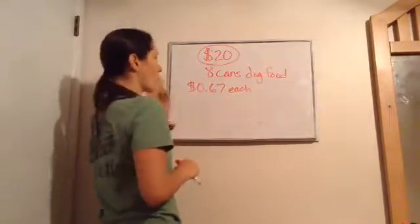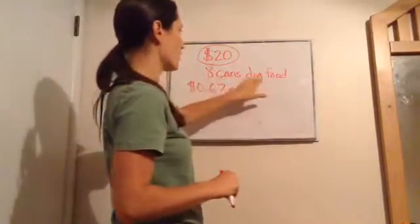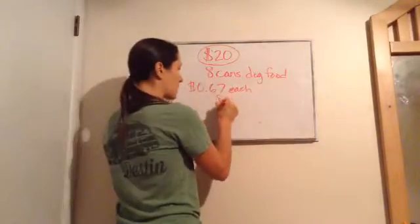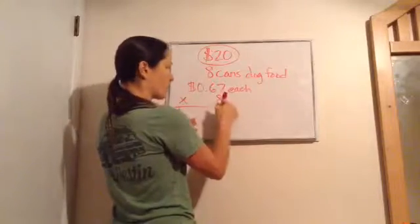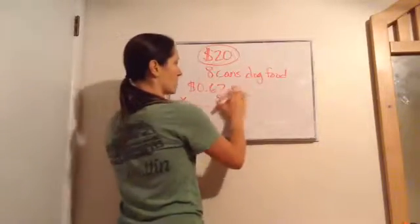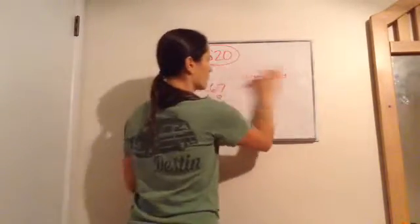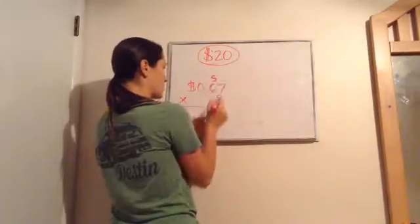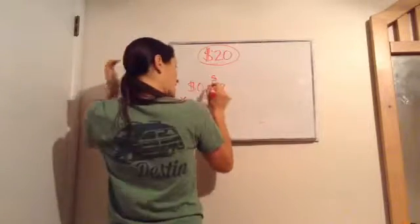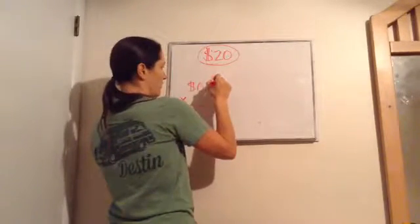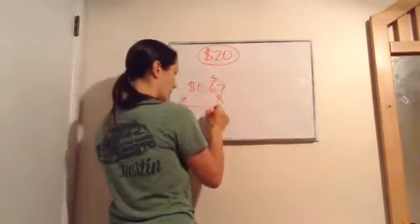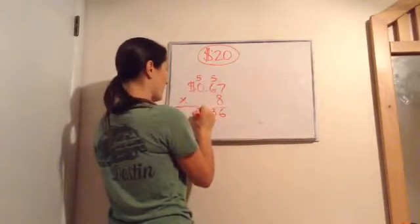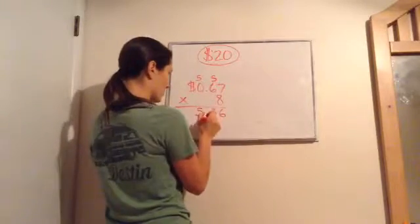We're going to take eight cans of dog food at 67 cents each, so we multiply 67 cents times 8. Working through the multiplication: 8 times 7 is 56, carry the 5; 8 times 6 is 48, plus 5 is 53. So we get 536.